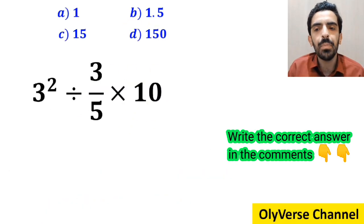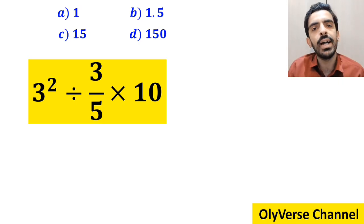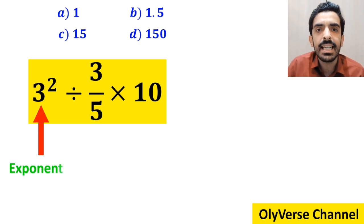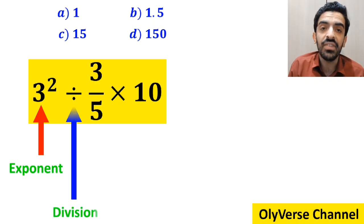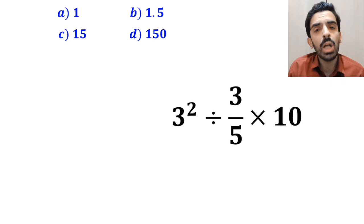Now let's go step by step together and I will show you how we should solve this expression properly. Alright, as you can see on the screen, in this expression, first we have an exponent, then a division sign, and finally a multiplication. To solve this question,